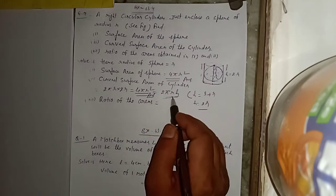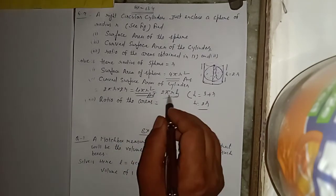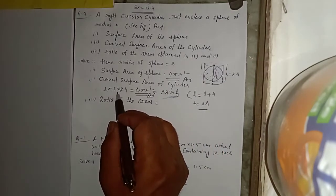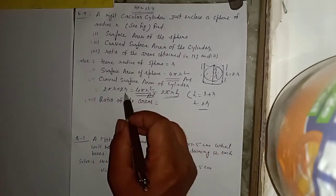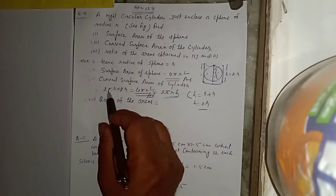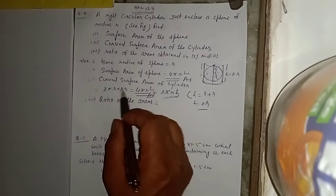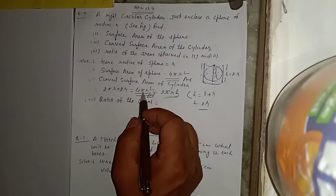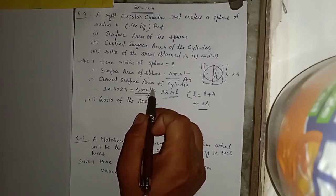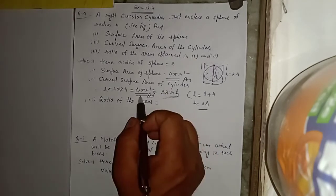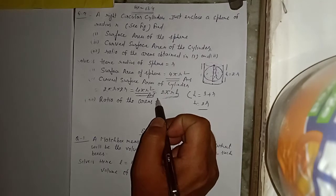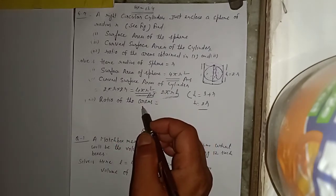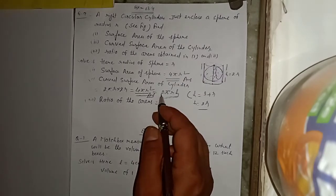h की जगह 2r रखेंगे: 2πr × 2r = 4πr²। तो curved surface area of cylinder = 4πr²।